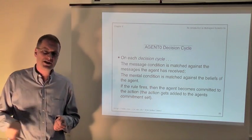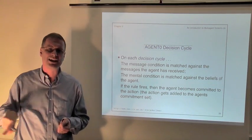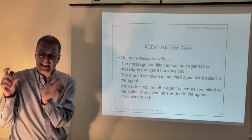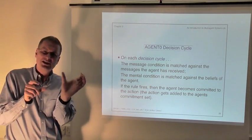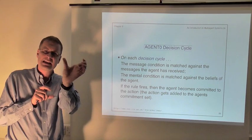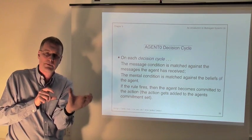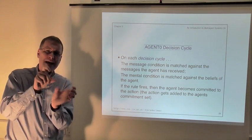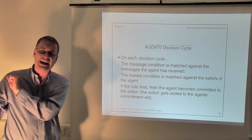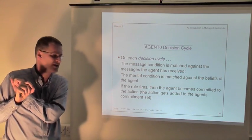Each decision cycle, each time an Agent Zero agent goes around its decision cycle to decide what to do, it takes each rule in turn and checks whether the message condition matches against the messages it's received, and whether the mental condition matches against its beliefs. If both conditions match, the rule fires and the right-hand side becomes a new commitment for the agent.